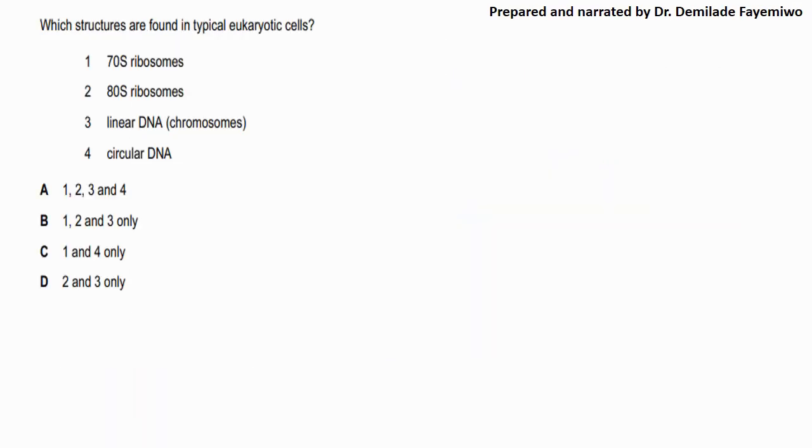This question says which structures are found in typical eukaryotic cells: 70S ribosomes, 80S ribosomes, linear DNA, circular DNA. I'll give you a while to just look at this and guess what do you think would be found in a typical eukaryotic cell. So we definitely know that 80S ribosomes are in eukaryotic cells, right? And we also know that linear DNA, that is chromosomes, are also in eukaryotic cells. But what about 70S ribosomes and circular DNA?